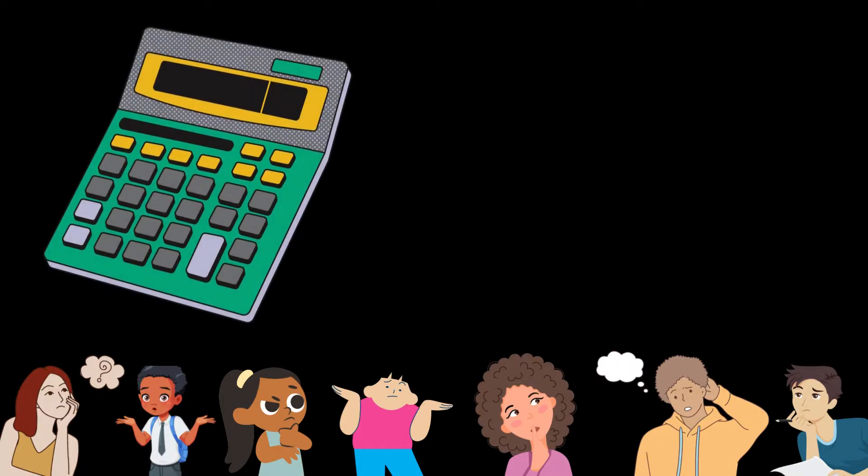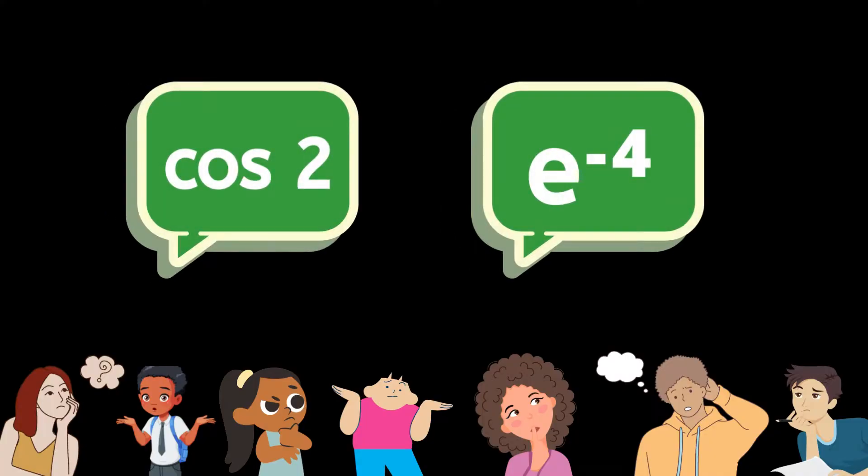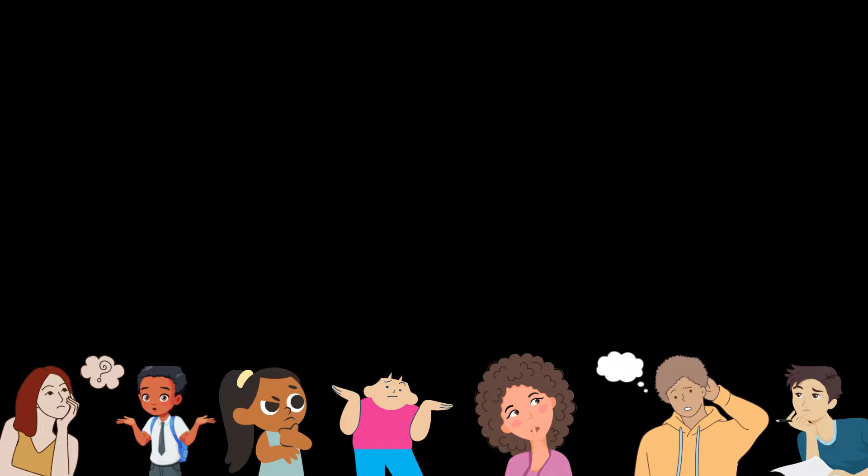Many people wonder how a calculator calculates sine, cosine, ln, and other complex functions. Others find it amusing how calculators determine the accurate value for a certain equation. For instance, you want to find the value of cos(2) or -e^4 in your calculator. Is there a mathematically precise way to evaluate these functions?